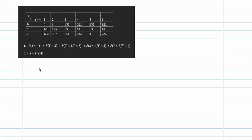The first step in solving any quantity on a two-dimensional discrete random case is to find the marginal values of X and Y. We find the marginal value of X by keeping X fixed and varying Y, and the marginal values of Y by keeping Y fixed and varying along the X values.